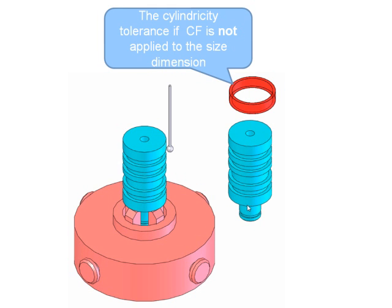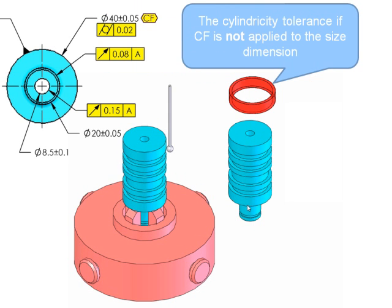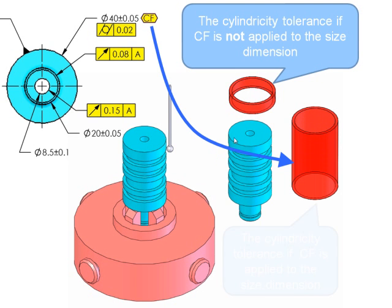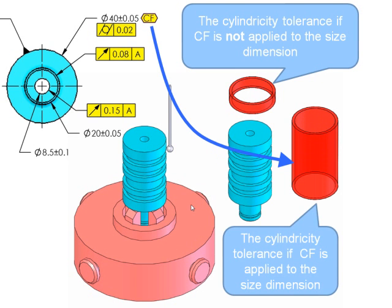In 2009 we were given the continuous feature symbol, CF. Now I can add that and it says treat those five diameters as though they were one continuous feature. If I do that and add a cylindricity to this, the cylindricity zone will apply to the entire length of those five features.